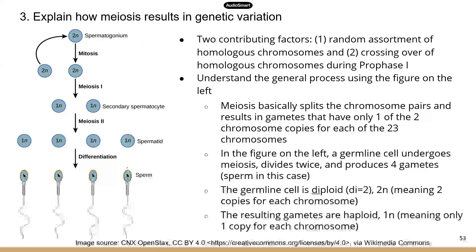The next topic is about how meiosis results in genetic variation. I'm sure you've wondered how come you look different than your sibling, even though you have the same parents. We inherit genetic materials from the same two people, but we can be so different — one may have red hair and another brown hair. This is all because meiosis is such a unique process, with steps that contribute to genetic variation. This is why siblings can look very different, even though they come from the same parents.